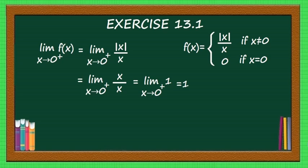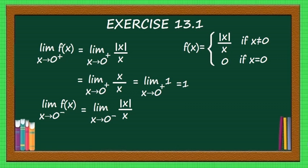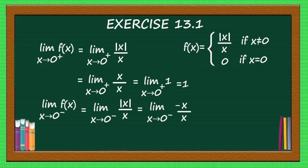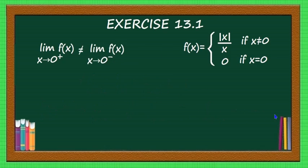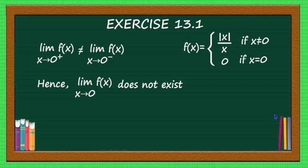Similarly, find limit extending to 0 minus of f(x). When x is less than 0, the function is still mod x by x, but mod x equals minus x when x is negative. So mod x by x equals minus x by x, which equals minus 1. Therefore, limit extending to 0 minus of f(x) is equal to minus 1. The left-hand limit and right-hand limit are different, so limit extending to 0 of f(x) does not exist.